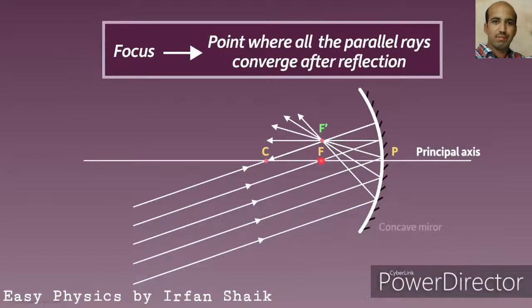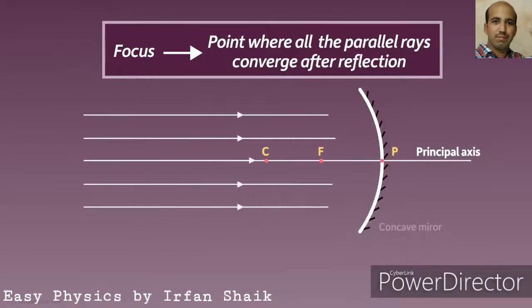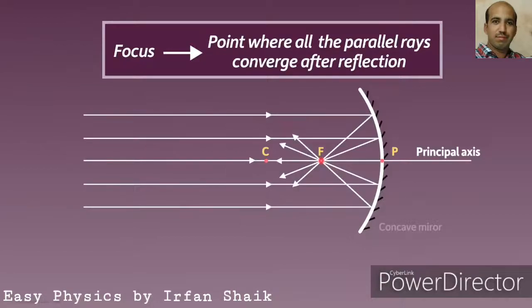When light rays are passing parallel to the principal axis, after reflection they will converge at the principal focus.